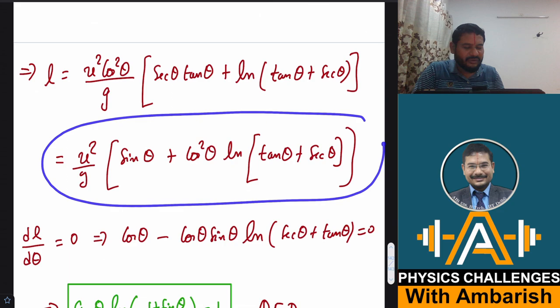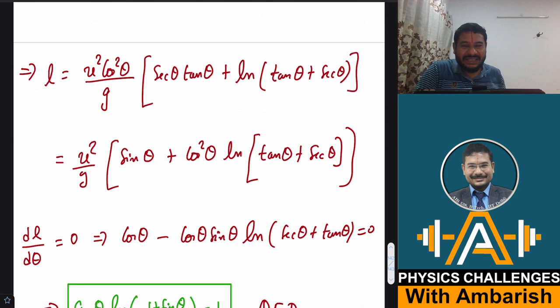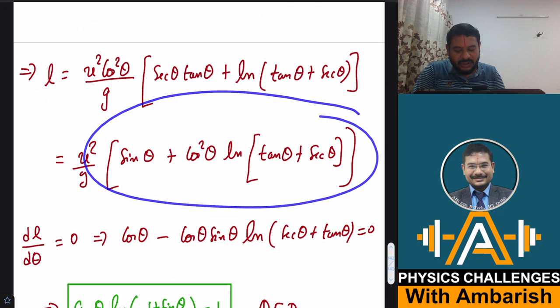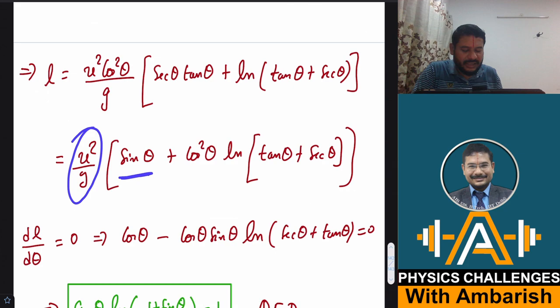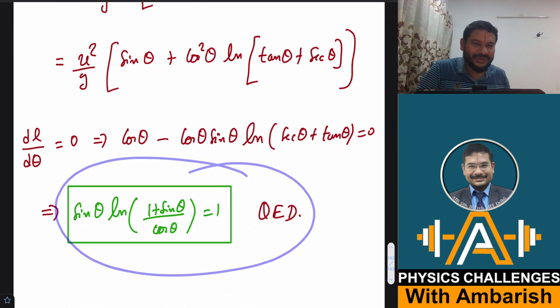So now what to do after this, you have to maximize l. So you just take the derivative of this and put it equal to 0. So if you do that, you put dl by d theta equal to 0. So then u square by g is of course constant. So this becomes cos theta and then you differentiate this with respect to theta. Finally, what do you get? Finally, you get this result and you rearrange this and this is what you get, the required result. So that's my analysis to this problem.